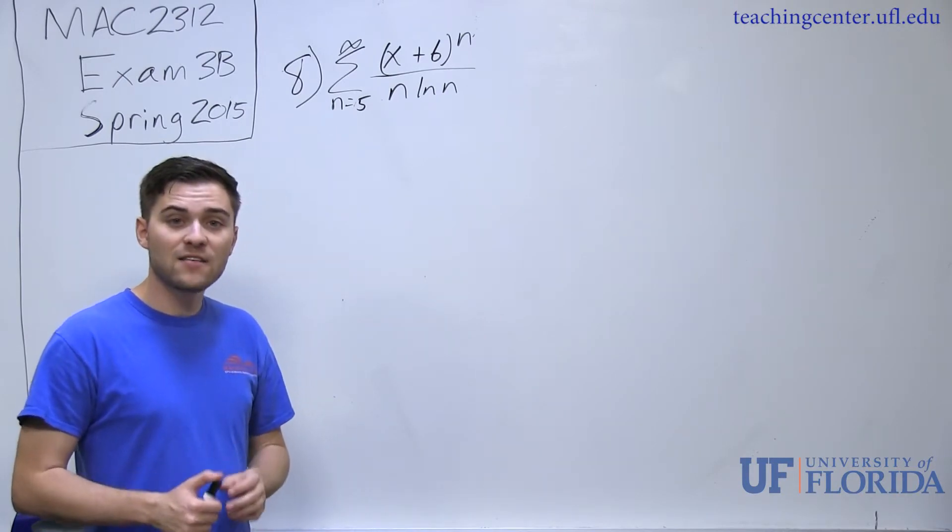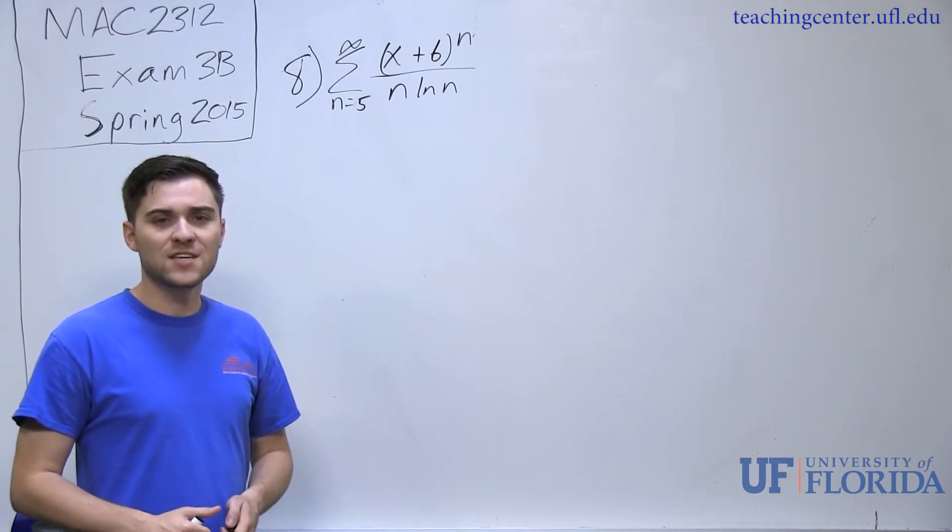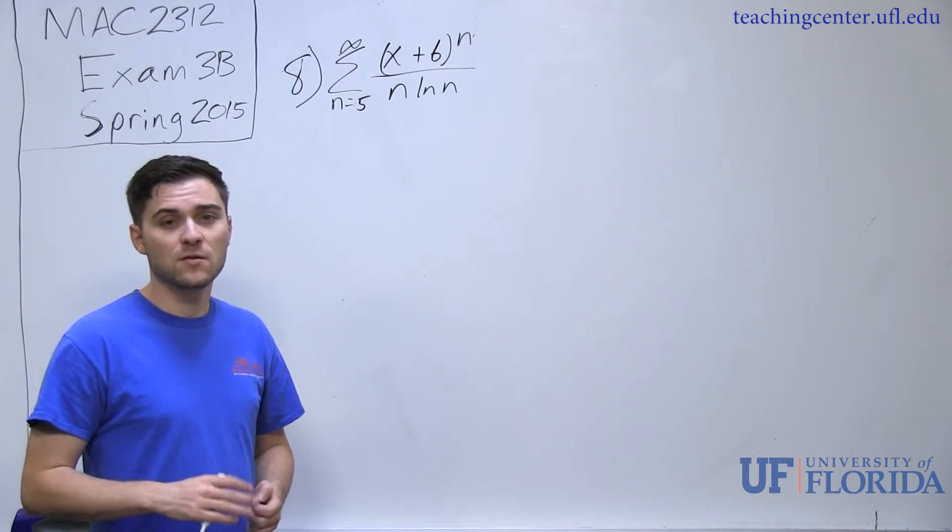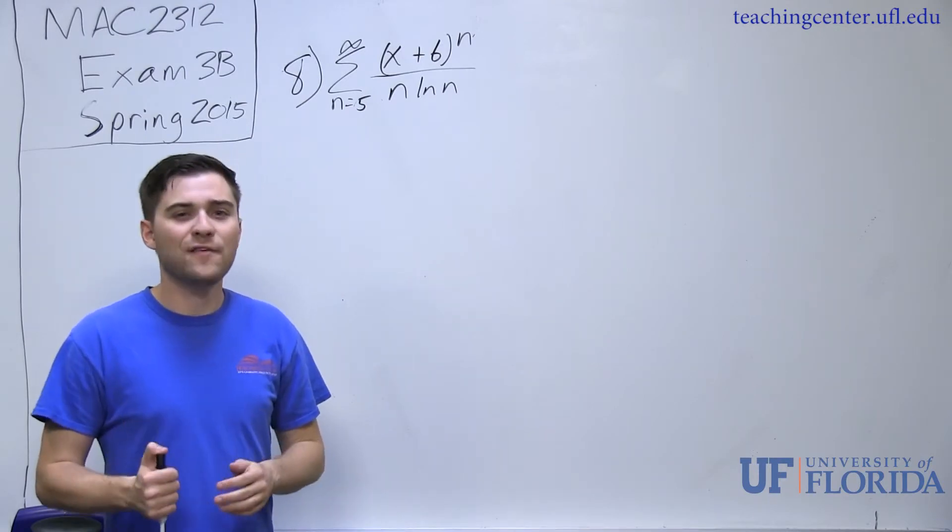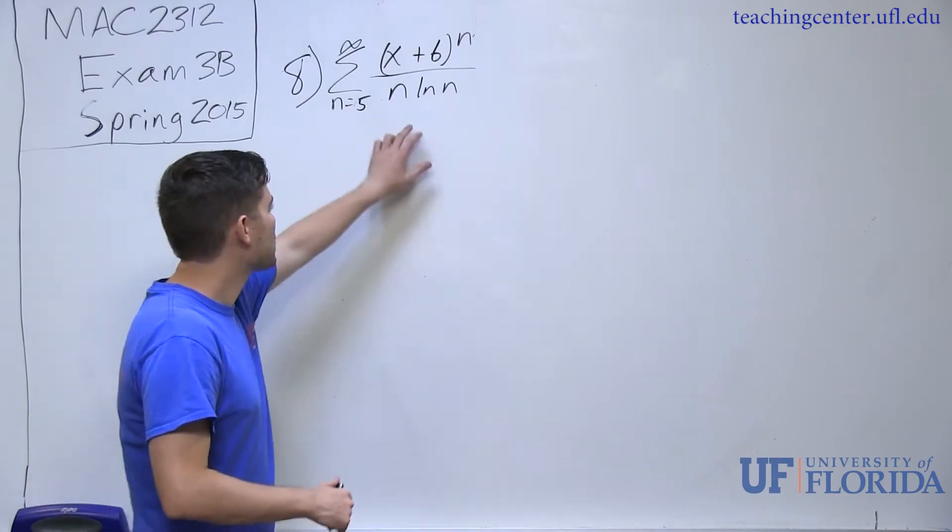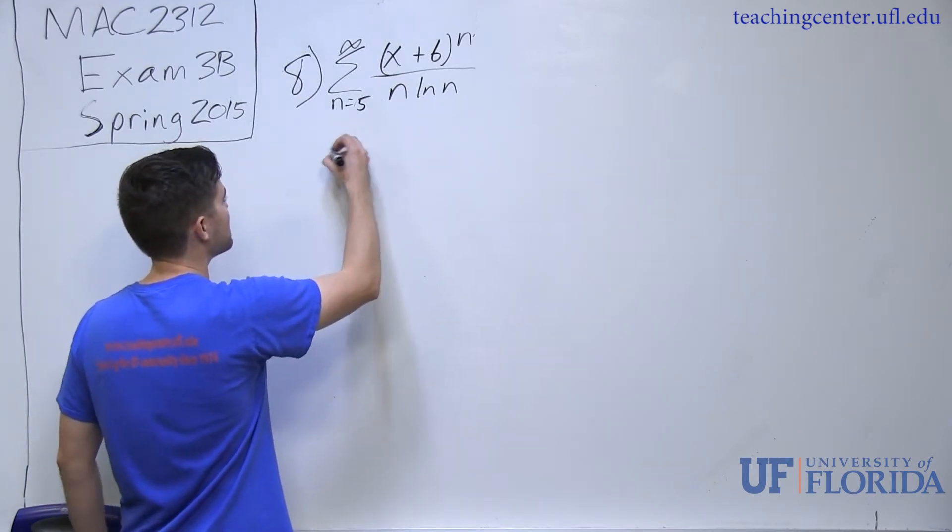To go ahead and find the interval of convergence, we can apply ratio or root test in this case. We can't apply geometric series test because n ln of n doesn't fit into a geometric series. Ratio or root test is probably the best way to go about this. In this case, I think I'm going to apply root test to it.